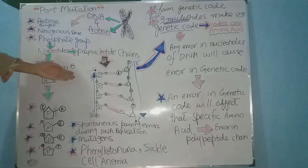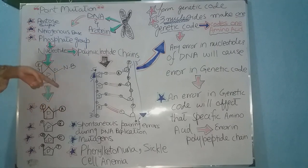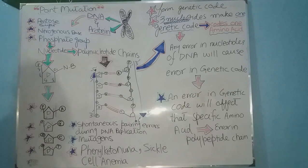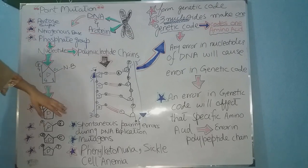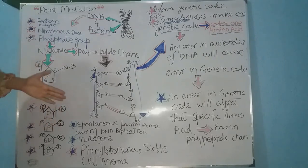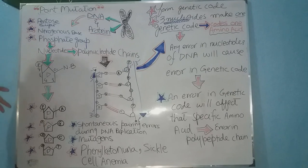Now let me explain the reasons behind mutations occurring in nucleotides of DNA. The first reason is spontaneous changes in base pairing that occur during DNA replication — if spontaneous changes come at that time, there will be mutations in the nucleotides. The second reason is mutagens, which may be medicines, chemicals, or X-rays — any external factor affecting the DNA.